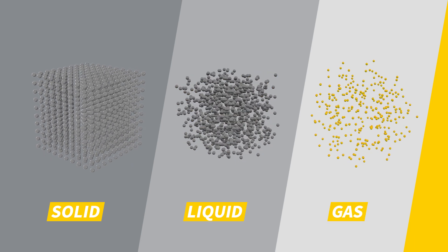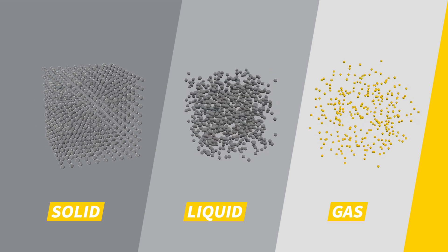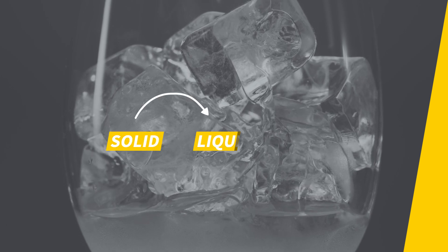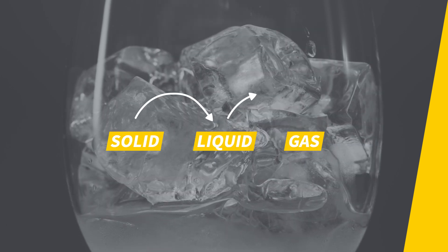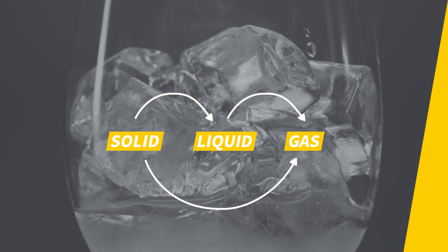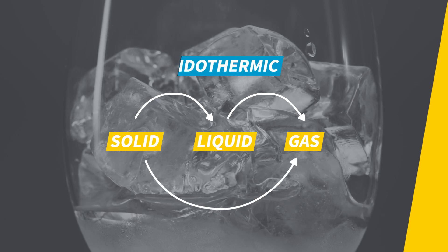In the gas phase, the molecules are much farther apart and separated from each other. Melting and vaporizing are examples of transitions from a more ordered to a less ordered state. When a substance goes from solid to liquid, from liquid to gas, or from solid straight to gas, that transition requires an input of energy. We call such a process endothermic.